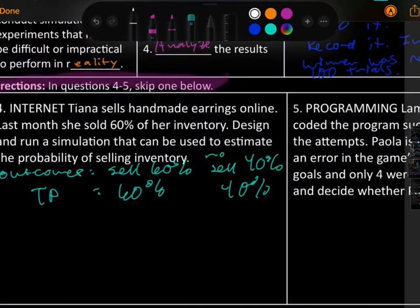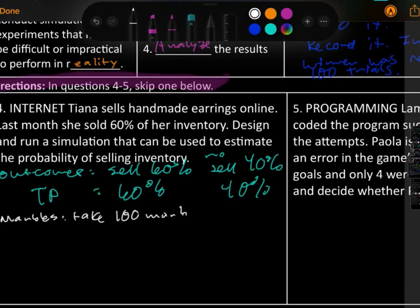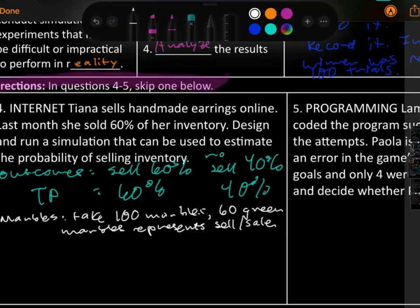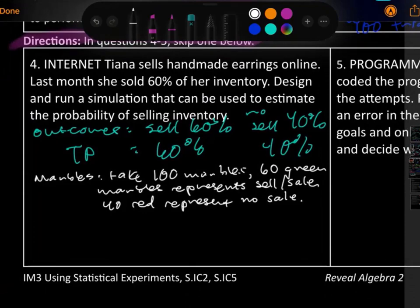Okay, so we can just list our outcomes. She sells something 60% of the time, and then no sell 40% of the time, right? Our theoretical probability is already 60%, and then experimental probability, that means a no sell would be at 40%. So we already kind of did that above.